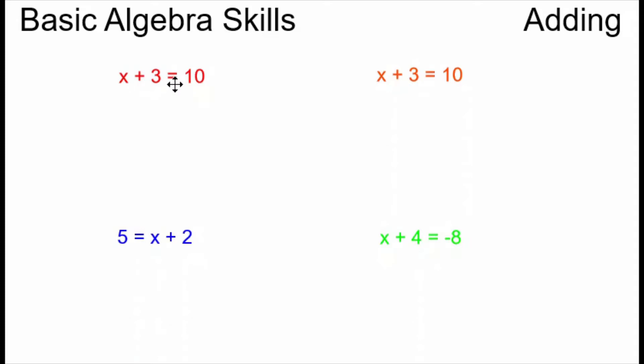On this example on the top left we have x plus 3 equals 10. My unknown is x and the goal of algebra is I want it to be alone. I want the x alone on one side of the equals but I have a 3 being added to it. So what do I do?